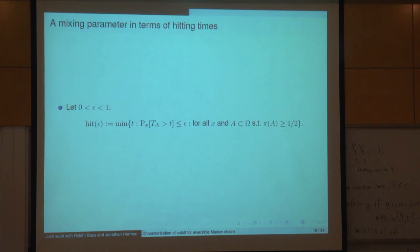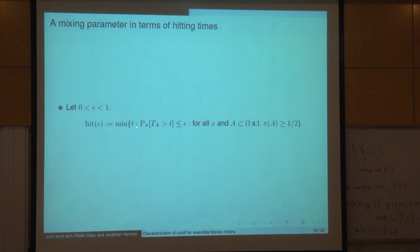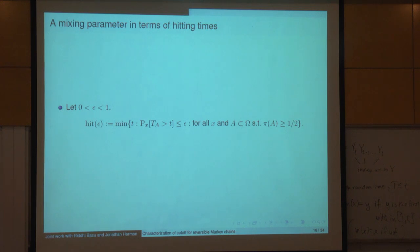We're still going to relate mixing to hitting times of large sets, as Perla did in her talk, but instead of looking at the expected hitting time, we're going to look at the tails. Just as t_mix(ε) determines the time we're close in total variation, hit(ε) will say: what's the first time such that for any set of measure at least one-half, the probability you have not hit it yet is less than ε?